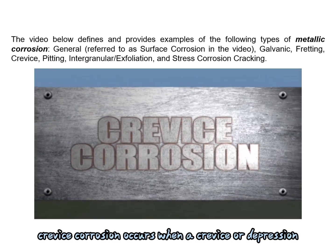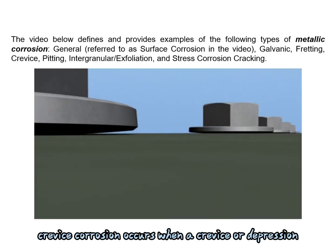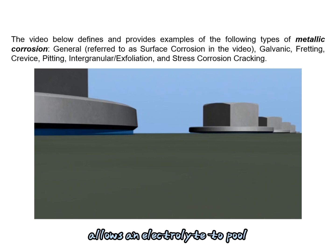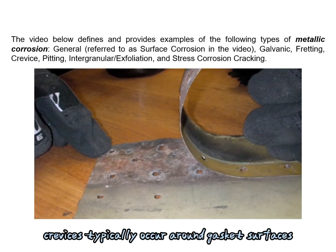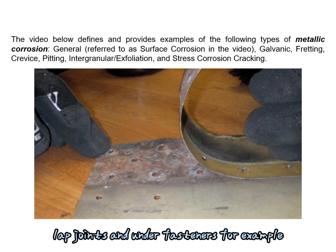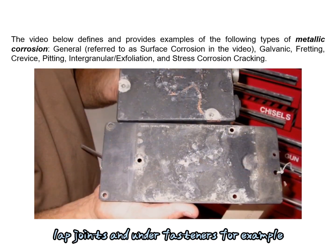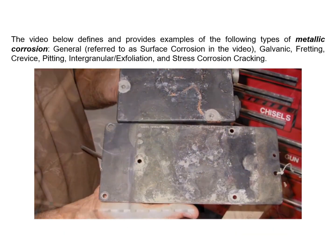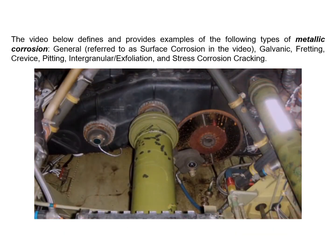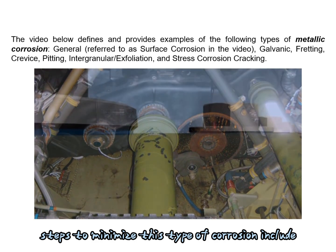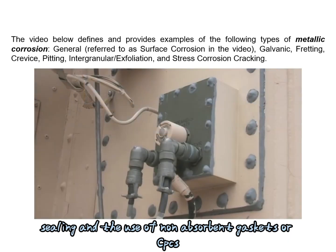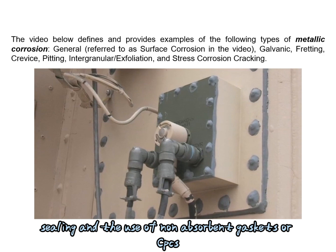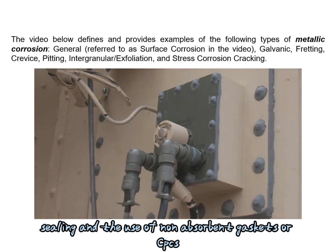Crevice corrosion occurs when a crevice or depression allows an electrolyte to pool. Crevices typically occur around gasket surfaces, lap joints, and under fasteners. Steps to minimize this type of corrosion include closing the crevice, sealing, and the use of non-absorbent gaskets or corrosion preventive compounds (CPCs).